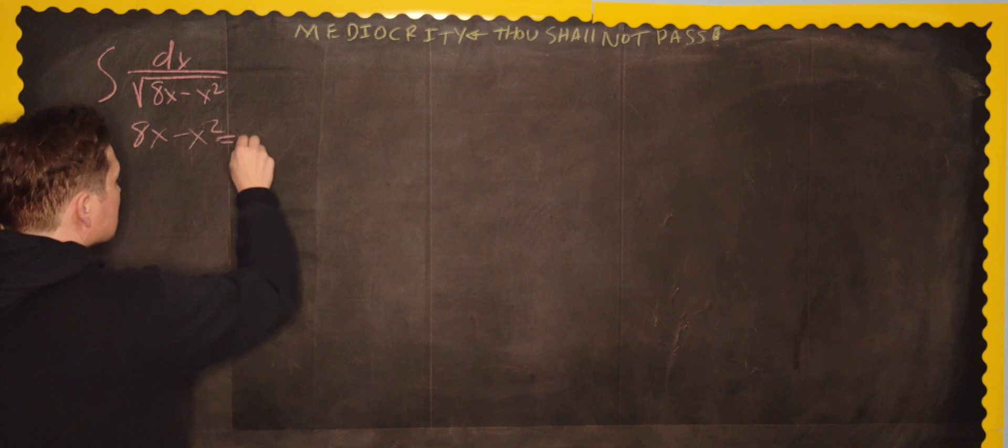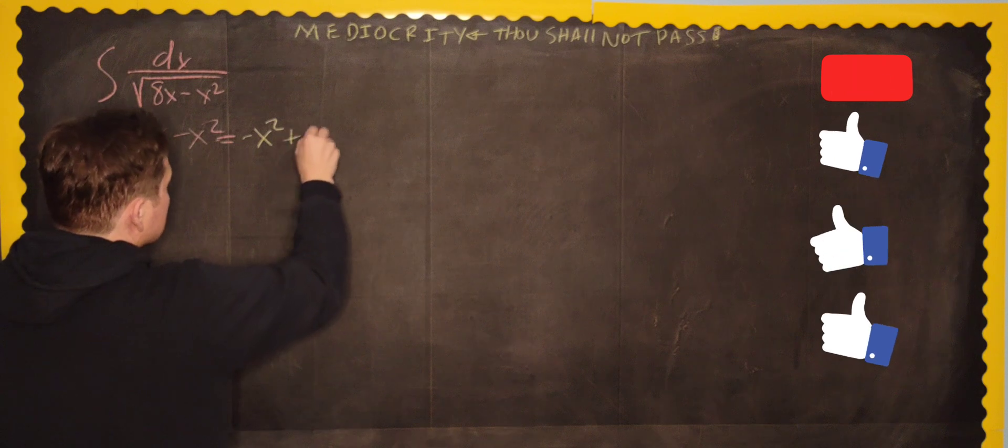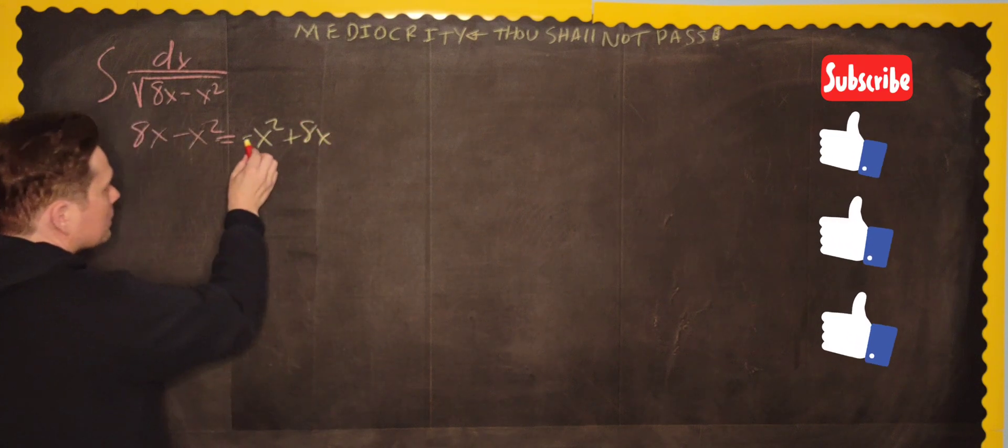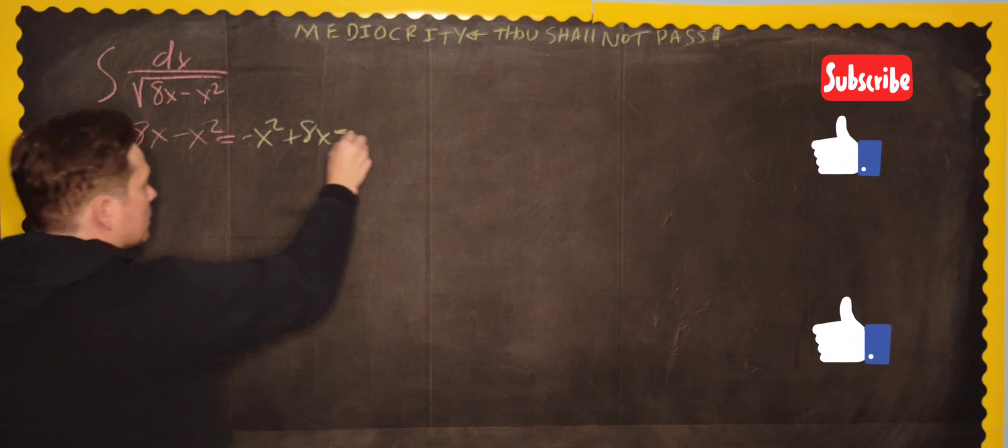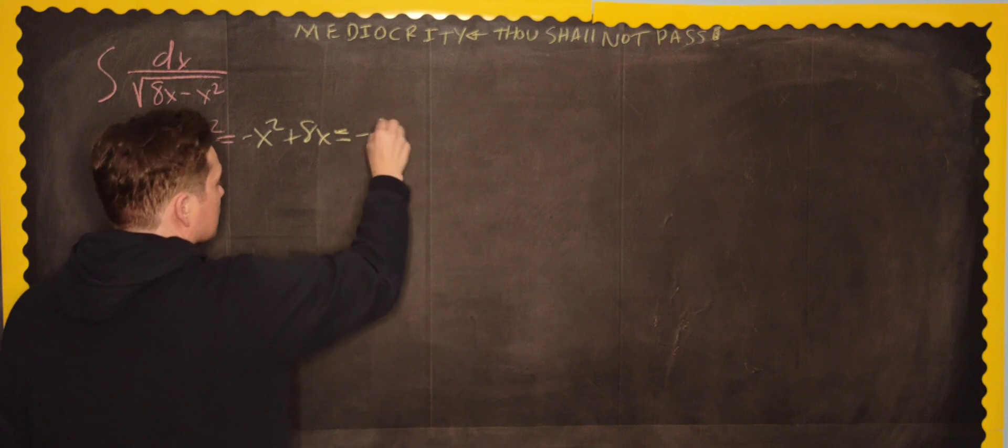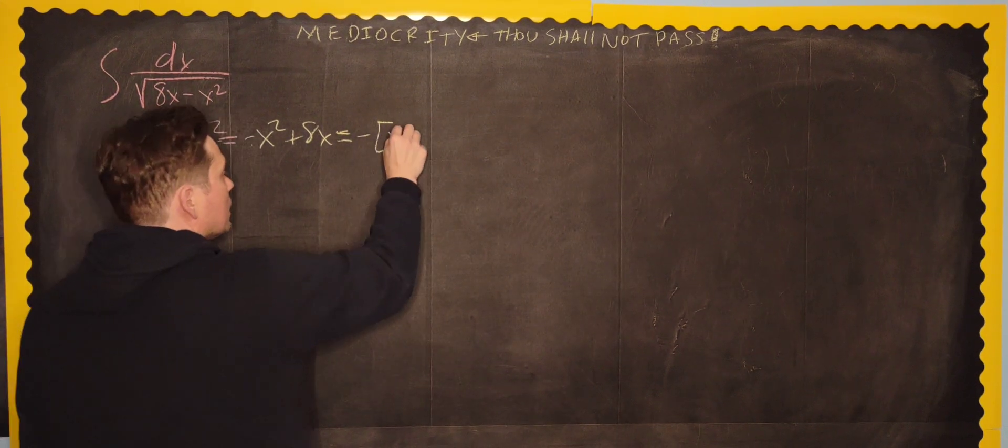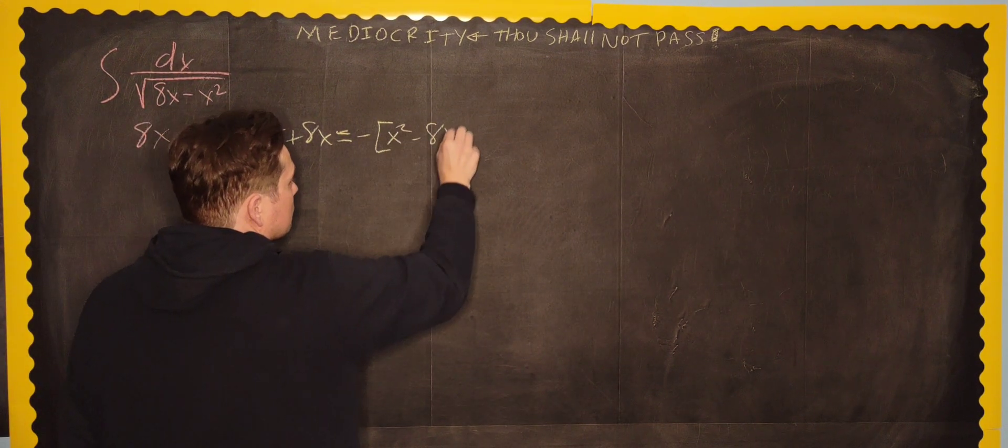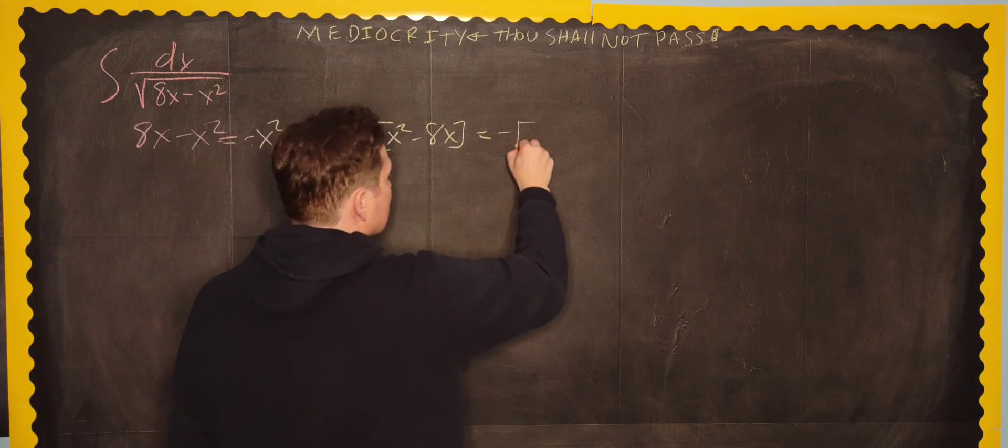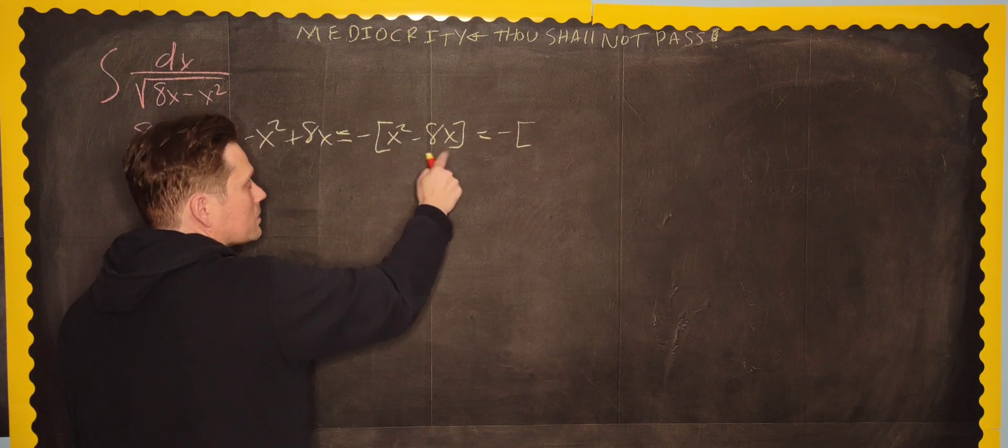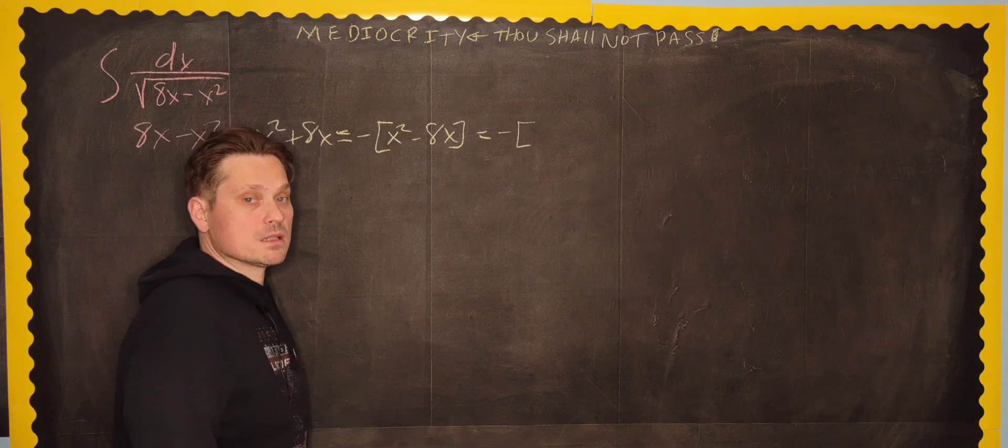So it's going to be negative x squared plus 8x. Now from here, factor negative 1 out, so it's going to be negative 1 on the outside, and then within brackets you have basically x squared minus 8x this way. And then you continue, so there's going to be a negative here, and then here you're going to complete the square on x squared minus 8x.